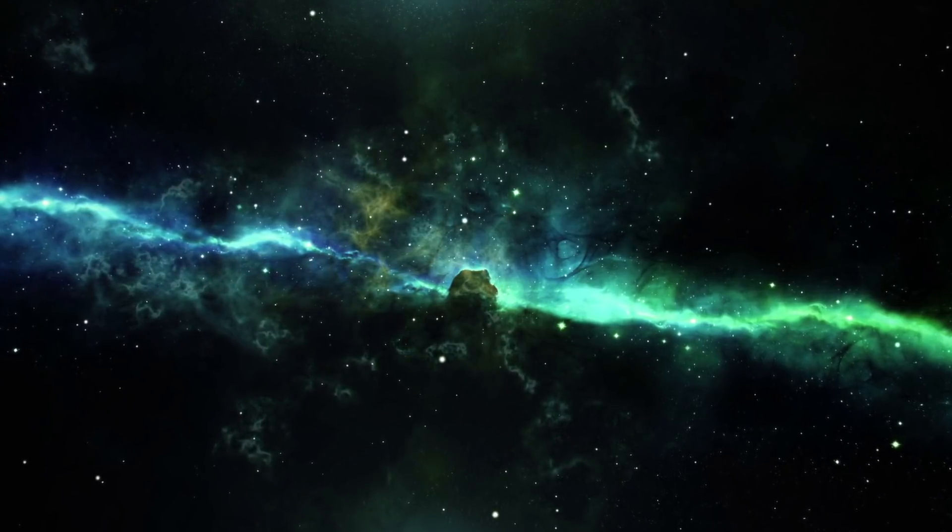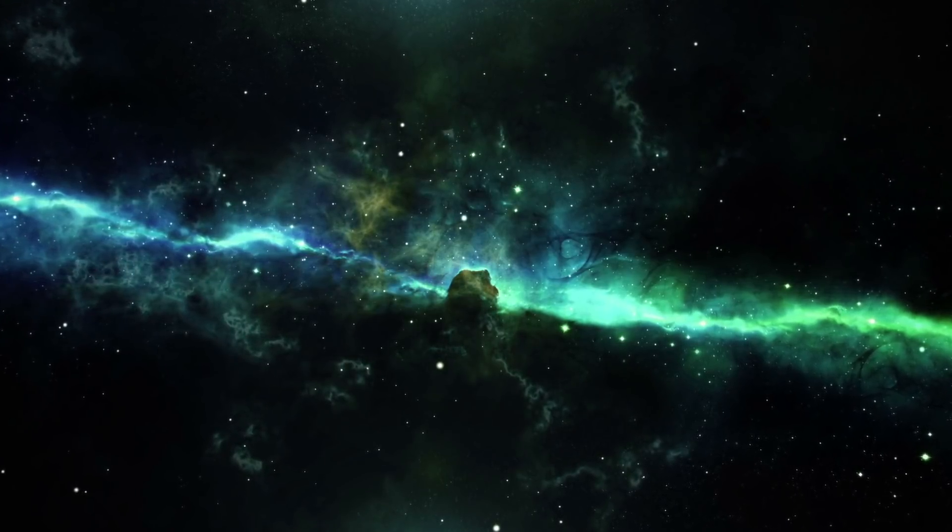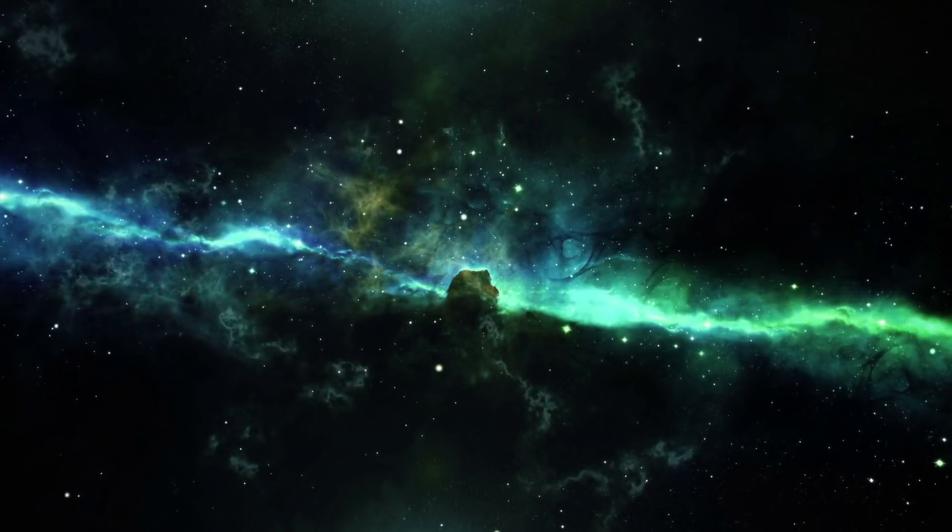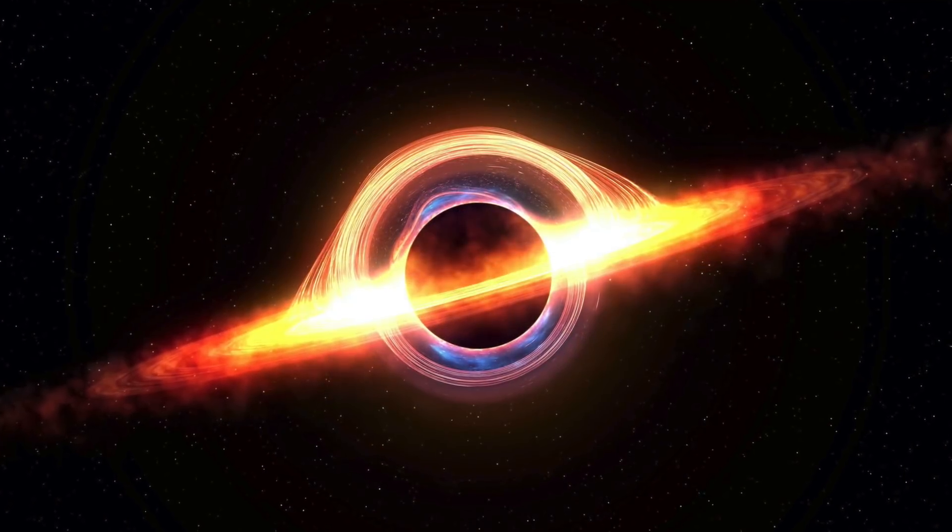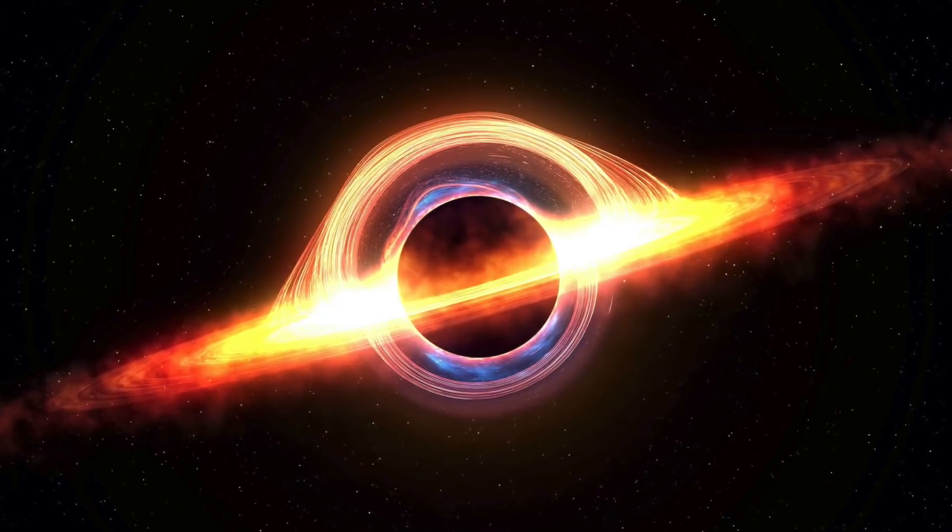One of the objects in the event was confirmed to be a black hole with enough total mass equal to 23 of our solar system's sun. The other object, eaten by the giant black hole, was measured to be around two and a half solar masses.